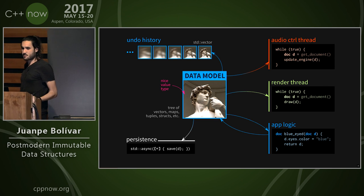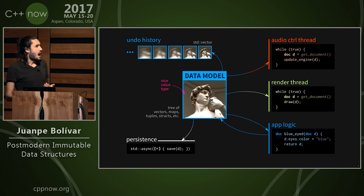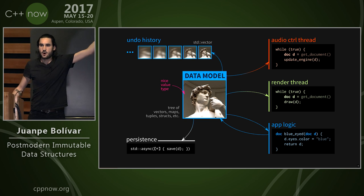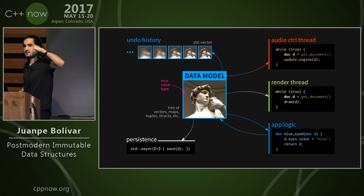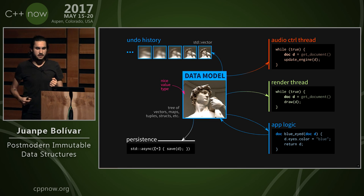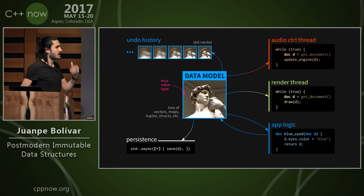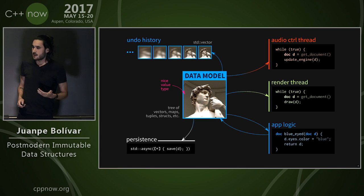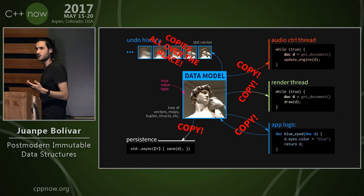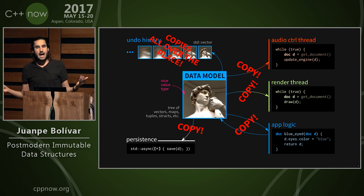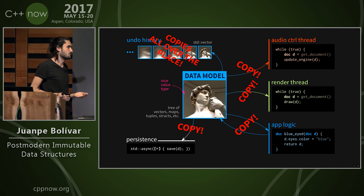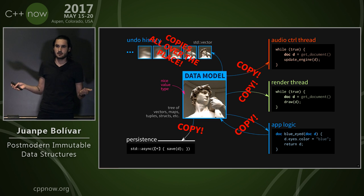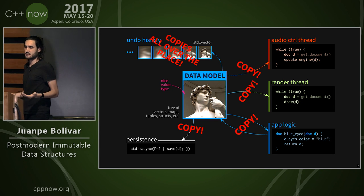We can add more representations for the data. I've worked a lot in the music software industry where we also have an audio thread as a sonic representation of our document, and we can follow the same architectural patterns. There is a problem, though: we're doing copies all over the place. If our data model is very simple, this kind of works. But if your document is hundreds of megabytes or even gigabytes big, this simply doesn't scale.